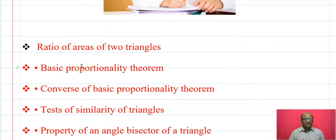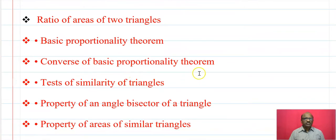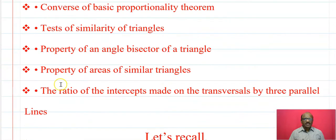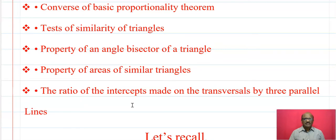In this chapter we will learn the ratio of areas of two triangles, the basic proportionality theorem, the converse of basic proportionality theorem, test of similarity of triangles, property of an angle bisector of a triangle, property of areas of similar triangles, and the ratio of intercepts made on a transversal by three parallel lines. These are the topics.